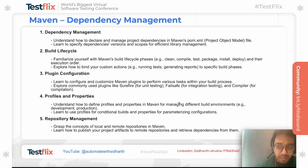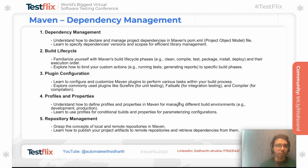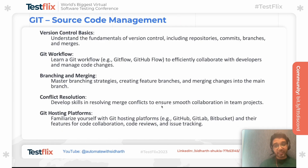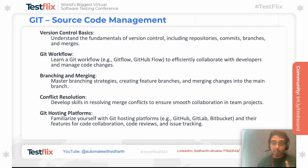Now let's look at what to learn in each of these five technologies. For Maven, focus on build lifecycle, plugin configuration, profiles and properties, repository management, and dependency management. For Git, focus on version control basics, Git workflows, branching and merging — which is very important as you may be the person who defines the branching strategy for the project — conflict resolution, and Git hosting platforms like GitHub, GitLab, and Bitbucket.